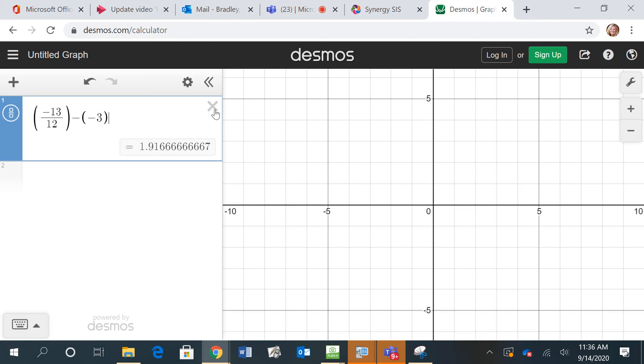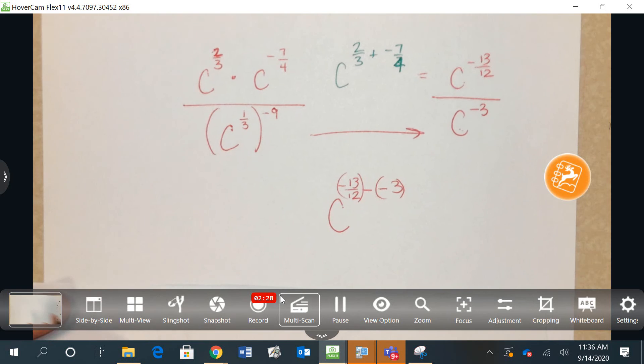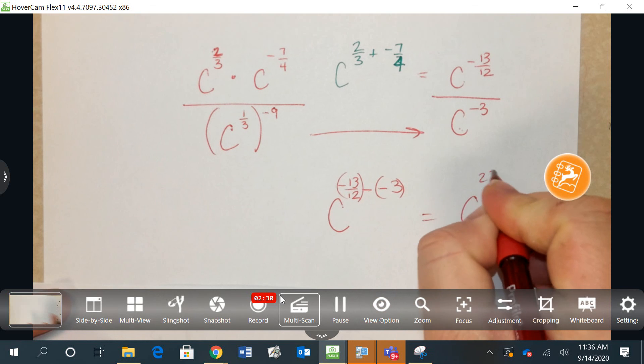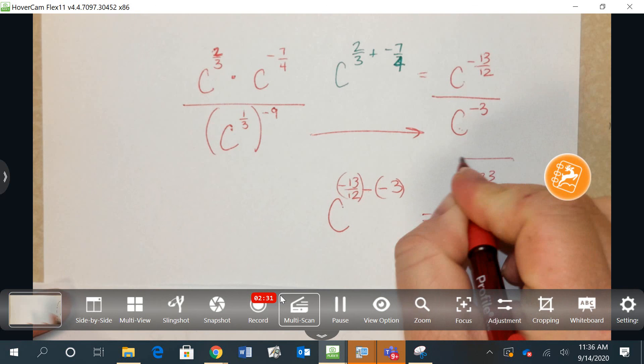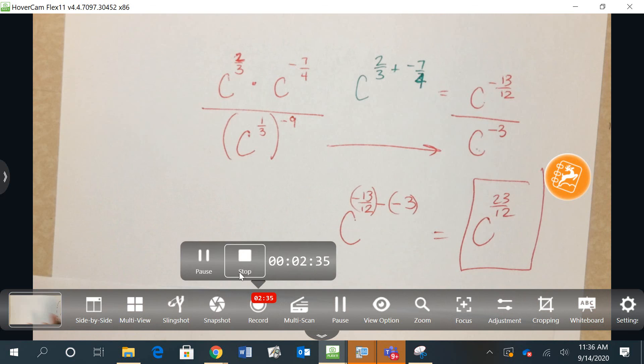I don't like that answer because I don't want to approximate. But when I click here, I get the exact answer of 23 over 12. So I come back. And this final answer would be C, 23 over 12. Final answer, simplified form.